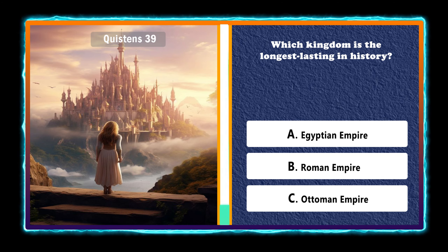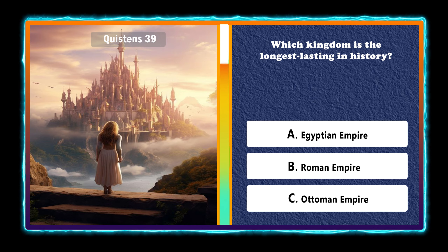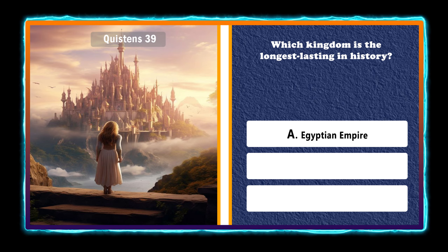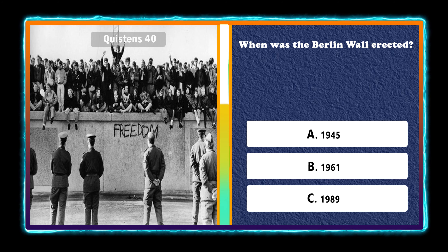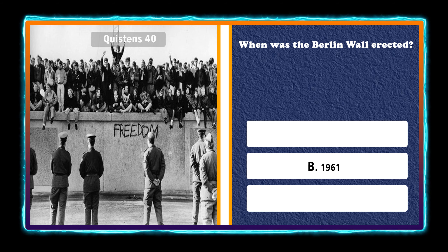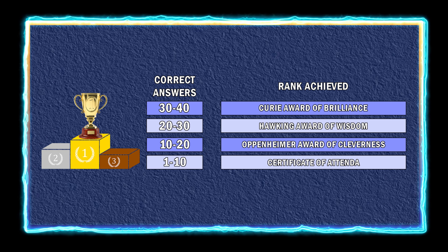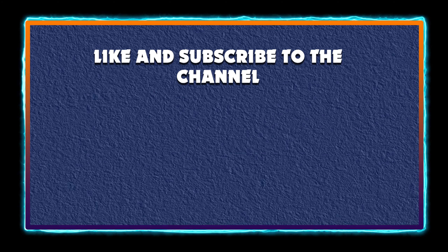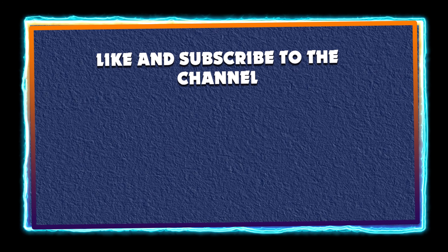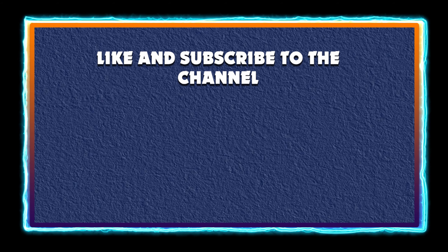Which kingdom is the longest lasting in history? Egyptian Empire. When was the Berlin Wall erected? 1961. Please support us by subscribing and following the channel. Thank you. To be continued...